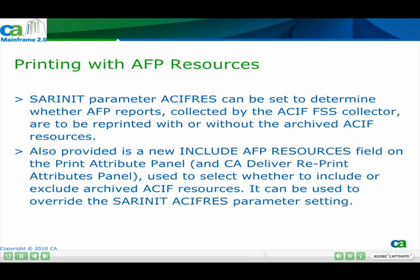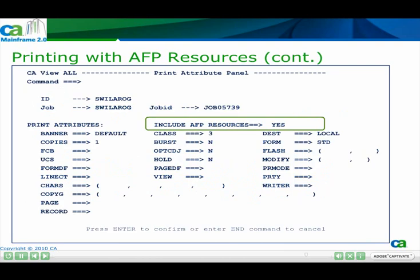Printing with AFP Resources. The SAR init parameter ASIF res can be set to determine whether AFP reports collected by the ASIF FSS collector are to be reprinted with or without the archived ASIF resources. Also provided is a new Include AFP Resources field on the Print Attribute panel and CA Deliver Reprint Attributes panel, used to select whether to include or exclude archived ASIF resources. It can be used to override the SAR init ASIF res parameter setting. Seen here is a sample print attribute panel from CAVUE 11.5. Please note the Include AFP Resources field.